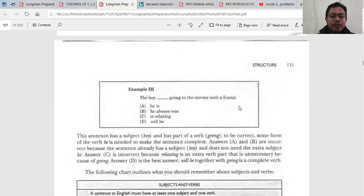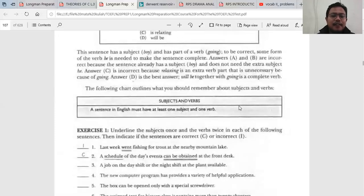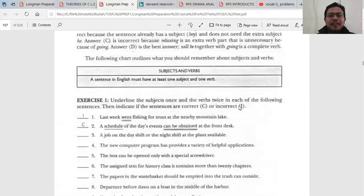In conclusion, subject and verbs: a sentence in English must have at least one subject and one verb.